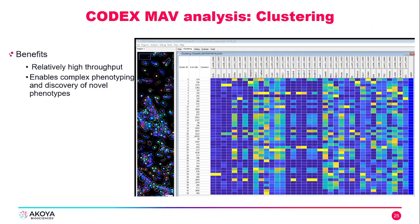MAV also has the ability to cluster cell populations. The benefits of clustering are that it has relatively high throughput and it enables complex phenotyping and discovery of novel phenotypes.